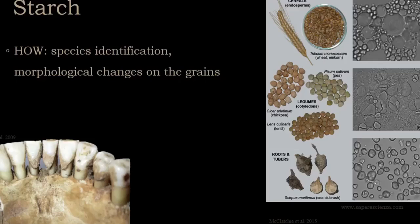Starch grains can be found in various kinds of environments, apart from in very high temperatures when they lose their shape. The samples are the same as for phytoliths — usually soil packed in bags — and also residues from artifacts like grinding stones, pottery, knives, and so on. Studies have also proven to give valuable results when starch grains are obtained by the analysis of dental calculus.